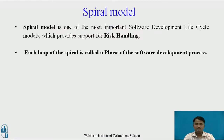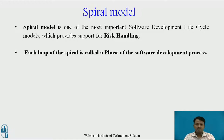Now we will see the Spiral Model. It is one of the most important software development lifecycle models, which provides support for risk handling. In its diagrammatic representation, it looks like a spiral with many loops. The exact number of loops is unknown and can vary from project to project. Each loop of the spiral is called a phase of the software development process. The radius of the spiral at any point represents the cost of the project so far, and the angular dimension represents the progress made in the current phase.